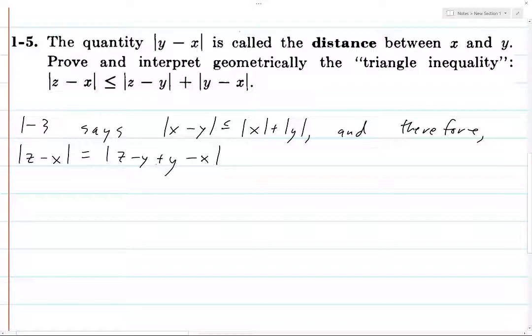And then we can apply this inequality here, and so this is going to be less than |z - y| + |y - x|. That's it, that's the triangle inequality.